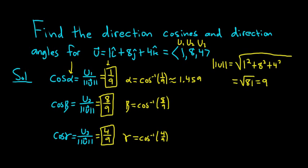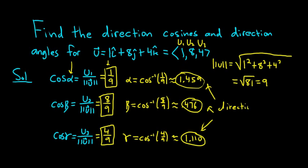And the second one, cosine inverse, apologies about my voice, it's coming back slowly. 0.476. And then the last one would be cosine inverse of 4/9, which is 1.110. So these are the direction angles.